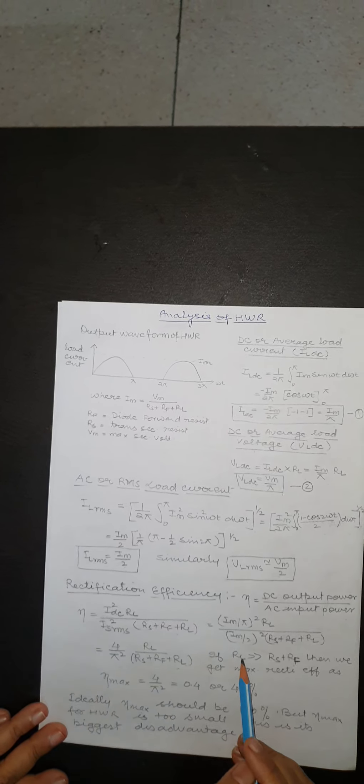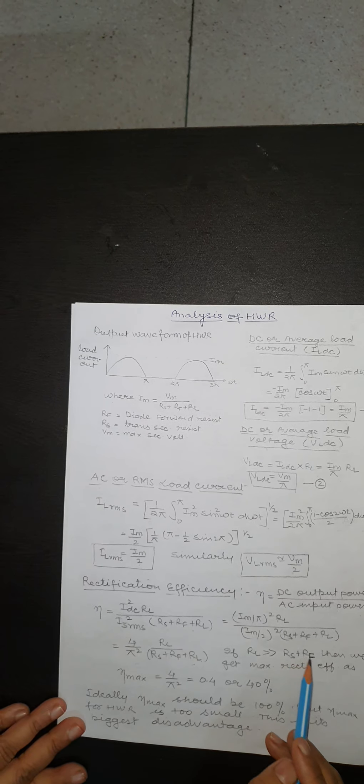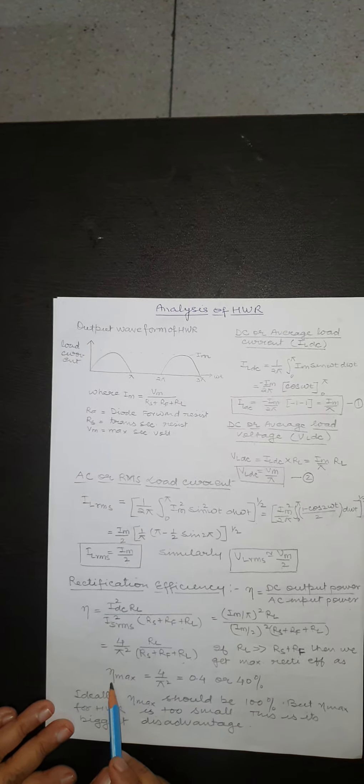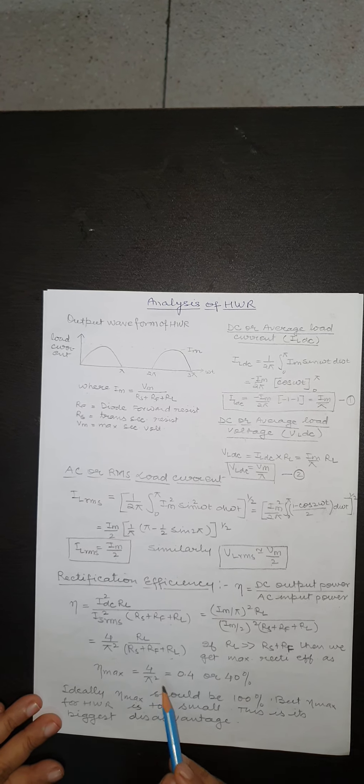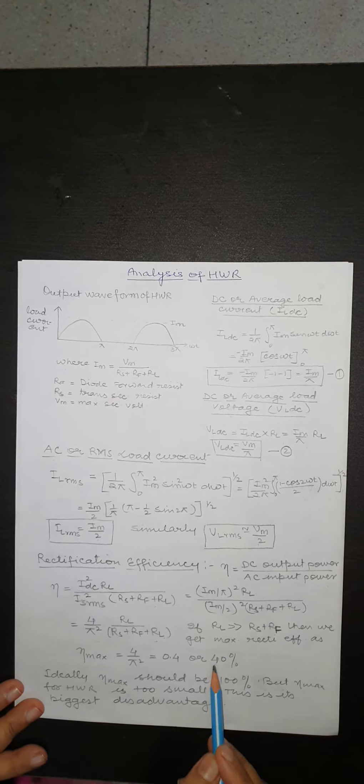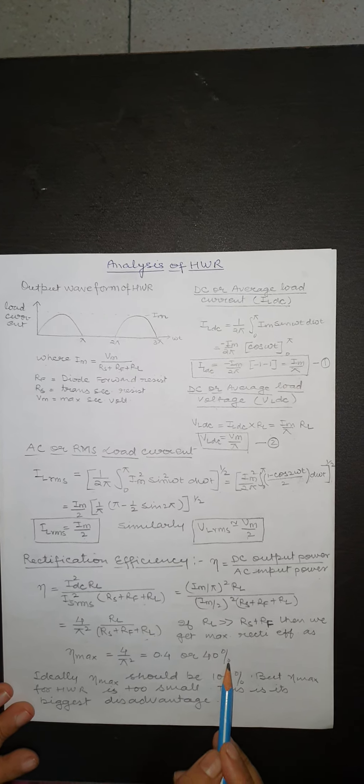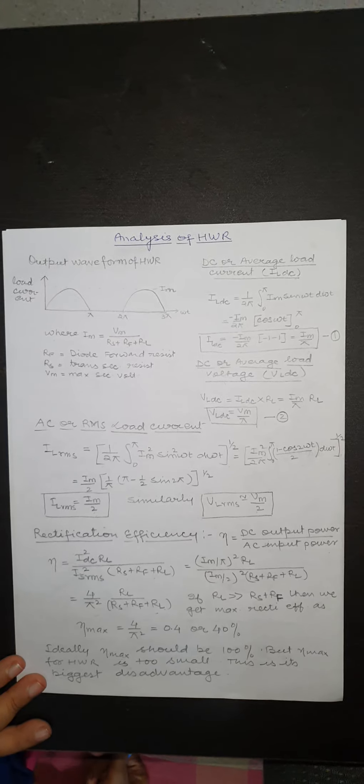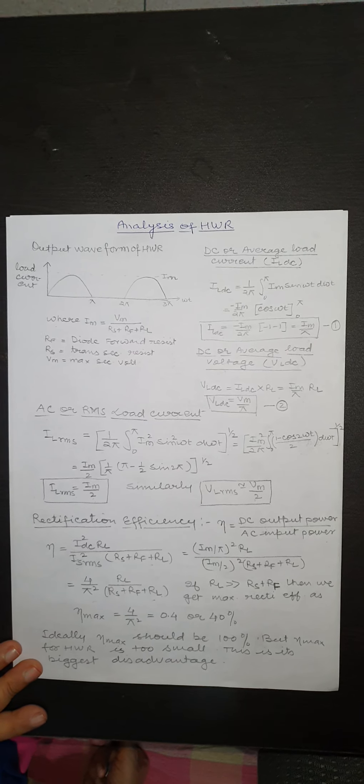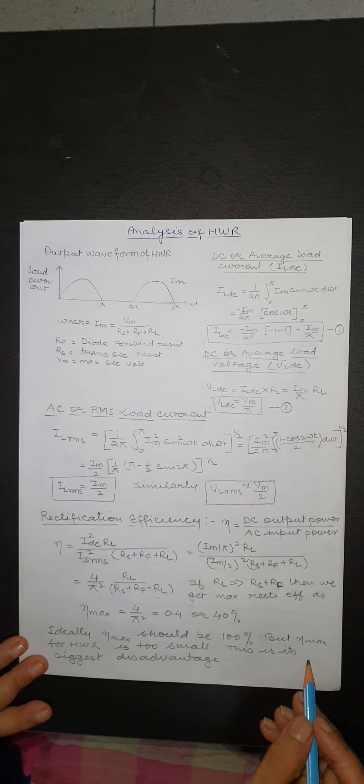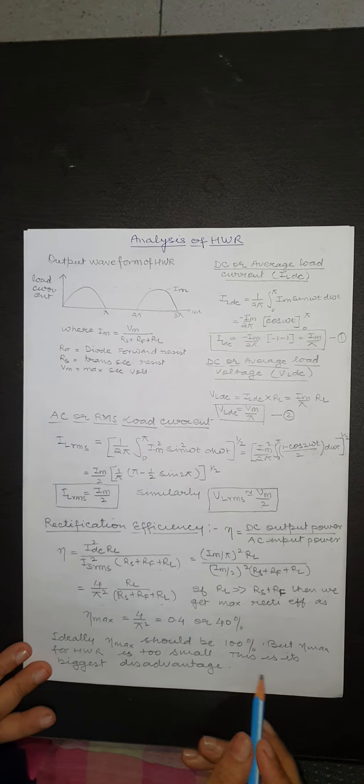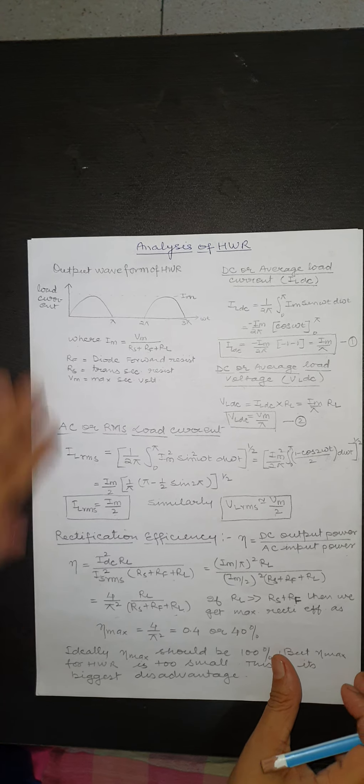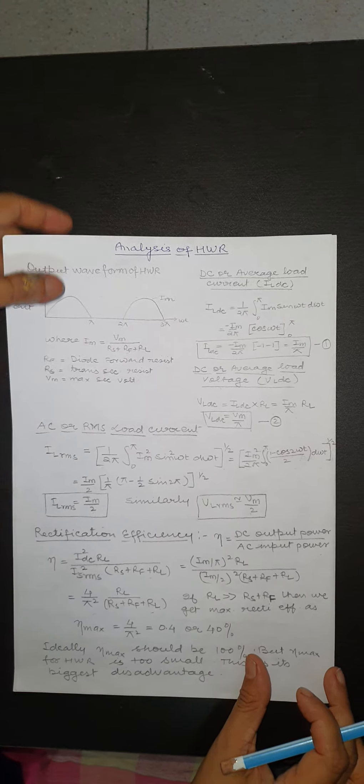Assuming that RL is much greater than Rs + Rf, we get the value of η equals 4/π² which equals 0.4 or 40%. Ideally, maximum value of η should be 100%, but for half-wave rectifier maximum value of η is too small and this is the biggest disadvantage of half-wave rectifier.